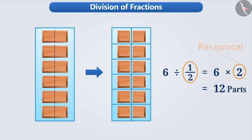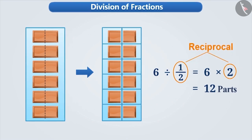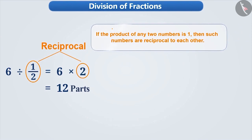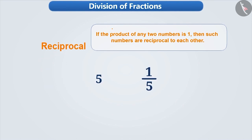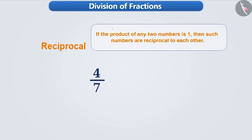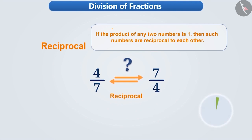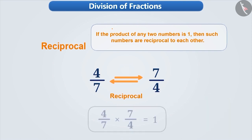Two and half are reciprocals of each other. If the product of any two numbers is one, then such numbers are called reciprocals of each other. Similarly, five and one by five are reciprocals. Can you tell whether four by seven and seven by four are reciprocals or not? Their product is one, so they too are reciprocals of each other.